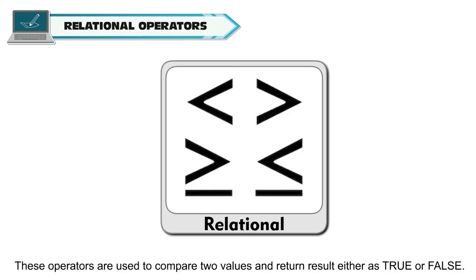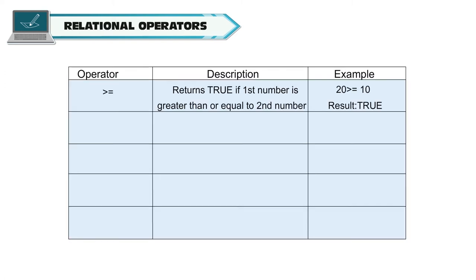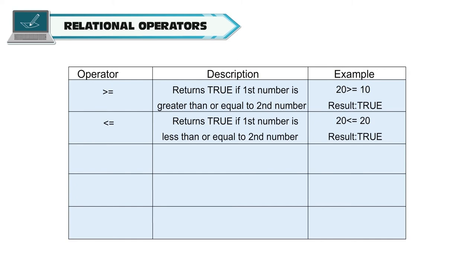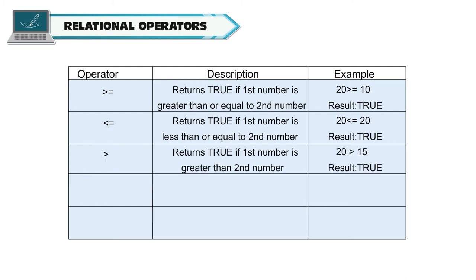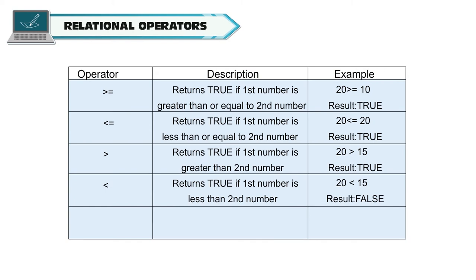Relational operators are used to compare two values and return a result of either true or false. Greater than or equal to (>=) returns true if the first number is greater than or equal to the second number — for example, 20 >= 10 is true. Less than or equal to (<=) returns true if the first number is less than or equal to the second — so 20 <= 20 is true. Greater than (>) returns true if the first number is greater than the second — 20 > 15 is true. Less than (<) returns true if the first number is less than the second — 20 < 15 is false.